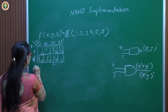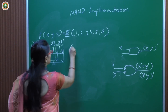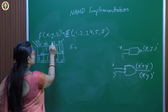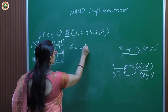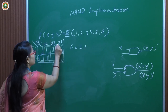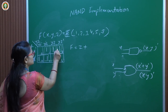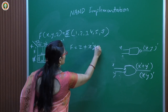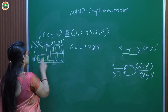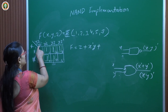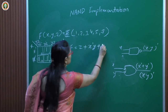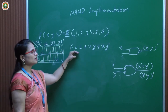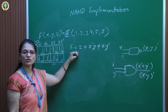Writing the simplified equation: for the quad, x and y cancel, leaving z. For one pair, z cancels, giving x'y. For another pair, y' is constant and z cancels, giving xy'. So the simplified equation is F = z + x'y + xy'.